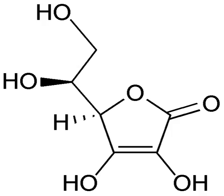Redox is a chemical reaction in which the oxidation states of atoms are changed. Any such reaction involves both a reduction process and a complementary oxidation process, two key concepts involved with electron transfer processes. Redox reactions include all chemical reactions in which atoms have their oxidation state changed. In general, redox reactions involve the transfer of electrons between chemical species. The chemical species from which the electron is stripped is said to have been oxidized, while the chemical species to which the electron is added is said to have been reduced.